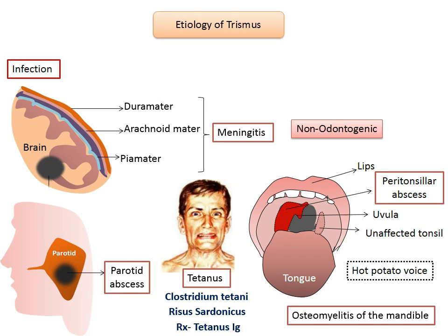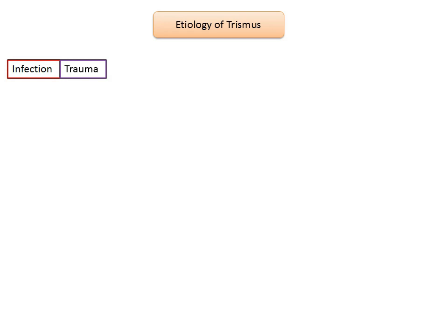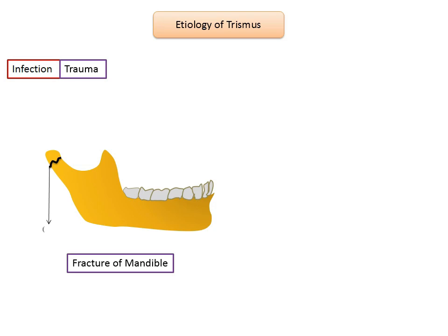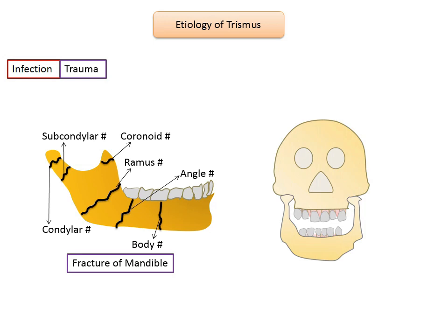The next etiology for trismus is trauma. Depending upon the type of injury and the direction of the traumatic force, fractures of the mandible may occur in different locations, producing mandibular hypomobility — such as subcondylar fracture, condylar fracture, coronoid, ramus, angle, and fracture of the body of the mandible. Zygomatic arch fracture or a fracture involving the zygomaticomaxillary complex can interfere with the movement of the coronoid process, limiting jaw movement.